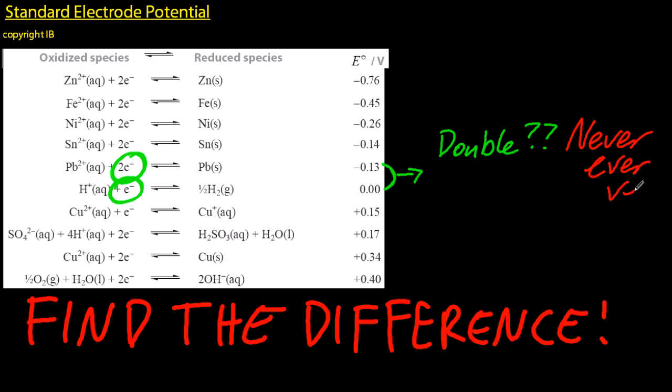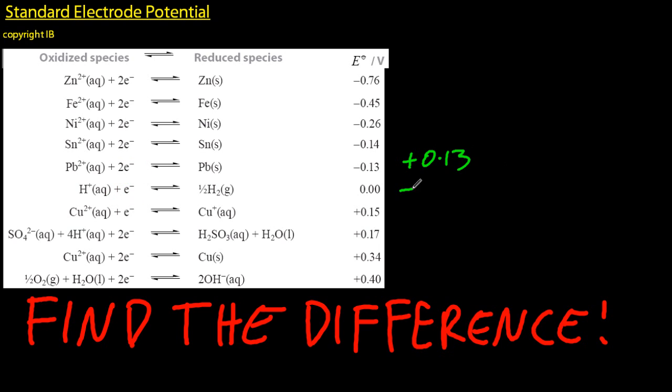It's an intrinsic property, voltage. Work per unit charge. What does that mean? It means you never have to double or triple or worry. Just find the difference. Positive if it's spontaneous, negative if it's non-spontaneous.